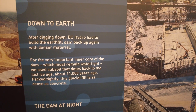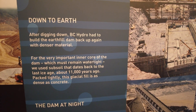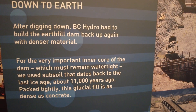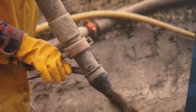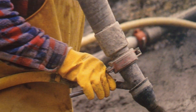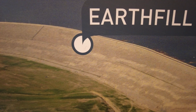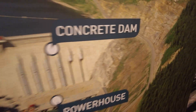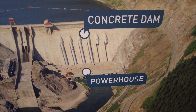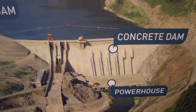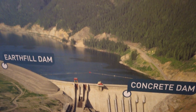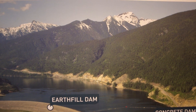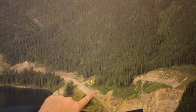They use subsoil dating back to the last ice age - about 11,000 years ago - packed tightly. This glacial fill is as dense as concrete. There's shotcrete being applied there - that's a fun job with a shotcrete hose. So this is what you'd call a hybrid dam because it's got both an earthfill dam and a concrete dam and powerhouse together.